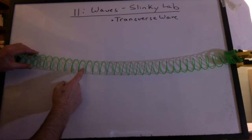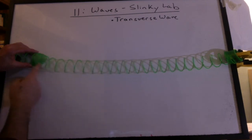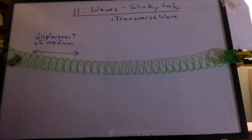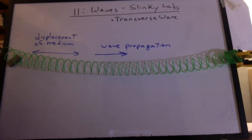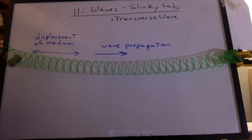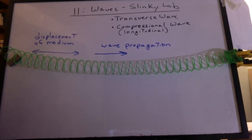Another way of making a disturbance in the medium is to grab some coil and squeeze them tighter, and then let them go. In this case, the displacement of the medium is parallel to the direction of the wave propagation. That's called a compressional wave, also known as a longitudinal wave.